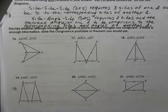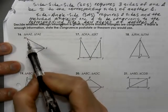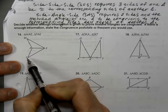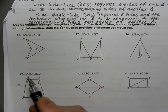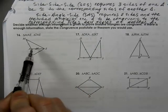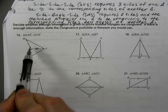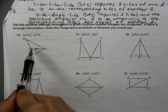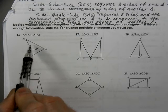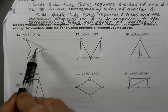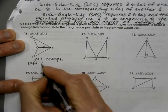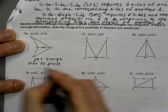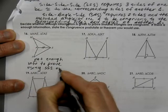Now we need to determine if these triangles are congruent. We have triangles MAE and TAE. We know they have a reflexive side, but we don't have all three sides congruent, and we don't know the angle in between those sides. So we don't have side-angle-side, and we don't have side-side-side. Not enough information to prove using SSS or SAS.